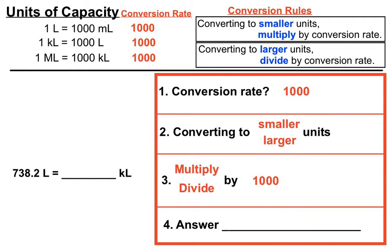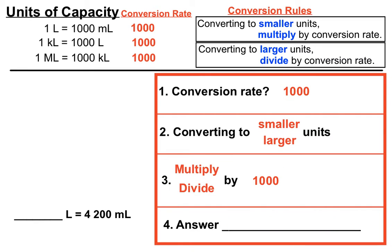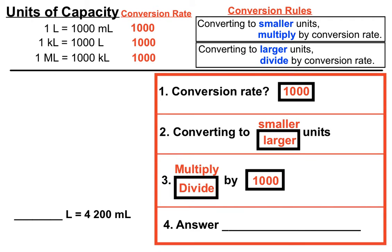This example converts to kilolitres from litres, using a conversion rate of a thousand, but we're moving to larger units. Larger units means we divide by the conversion rate of a thousand, giving us 0.7382 kilolitres. In the final example, we're converting to litres from millilitres — the conversion rate is once again a thousand, but we're converting to a larger unit, so we divide by a thousand, giving us 4.2 litres.